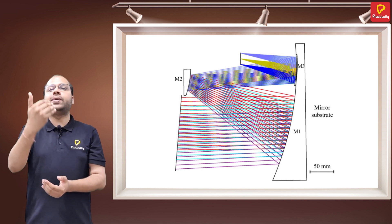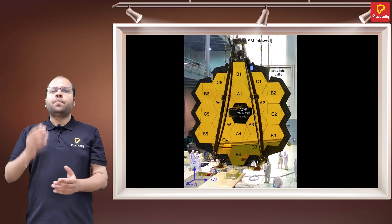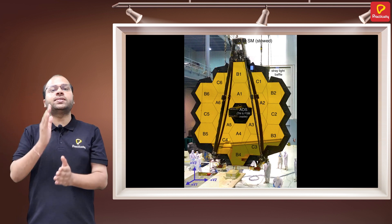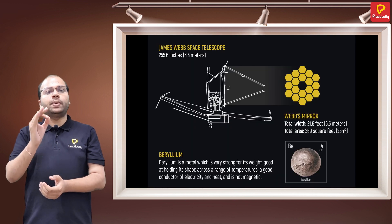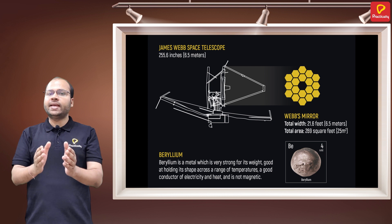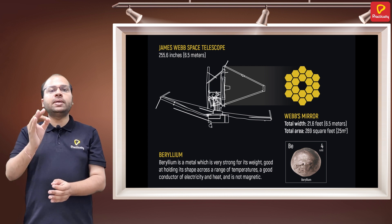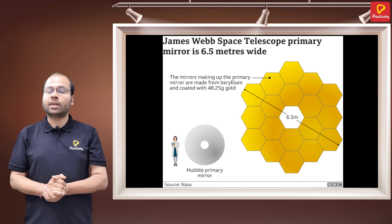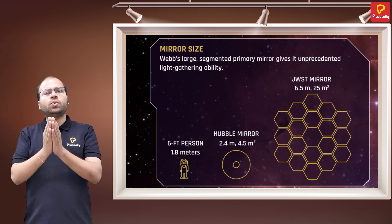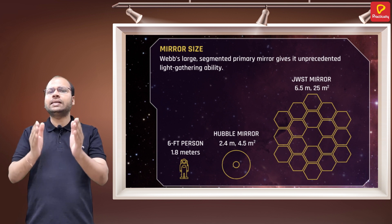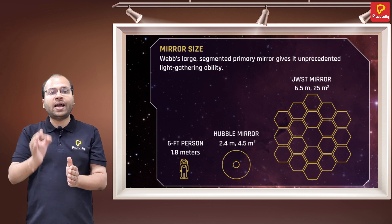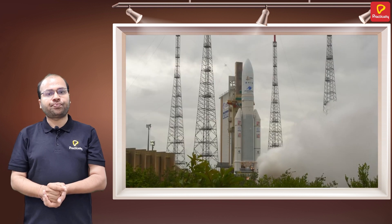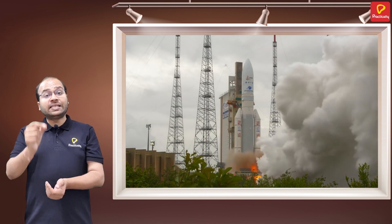Webb's primary mirror consists of 18 hexagonal mirror segments that are made of gold-plated beryllium, which combined create a 6.5 meters diameter as compared to the Hubble's 2.4 meters. This gives James Webb Space Telescope a light collecting area of 25 square meters, that is six times that of Hubble's.